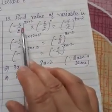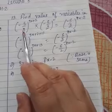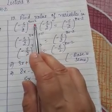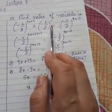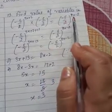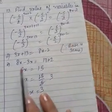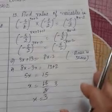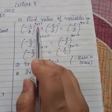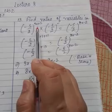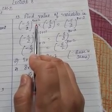The next question is: find the value of the variable in minus 5 by 2 raised to the power (3x + 2), multiplied by minus 5 by 2 raised to the power 11, equals minus 5 by 2 raised to the power (8x − 2). Here the variable is x, and we need to find its value.